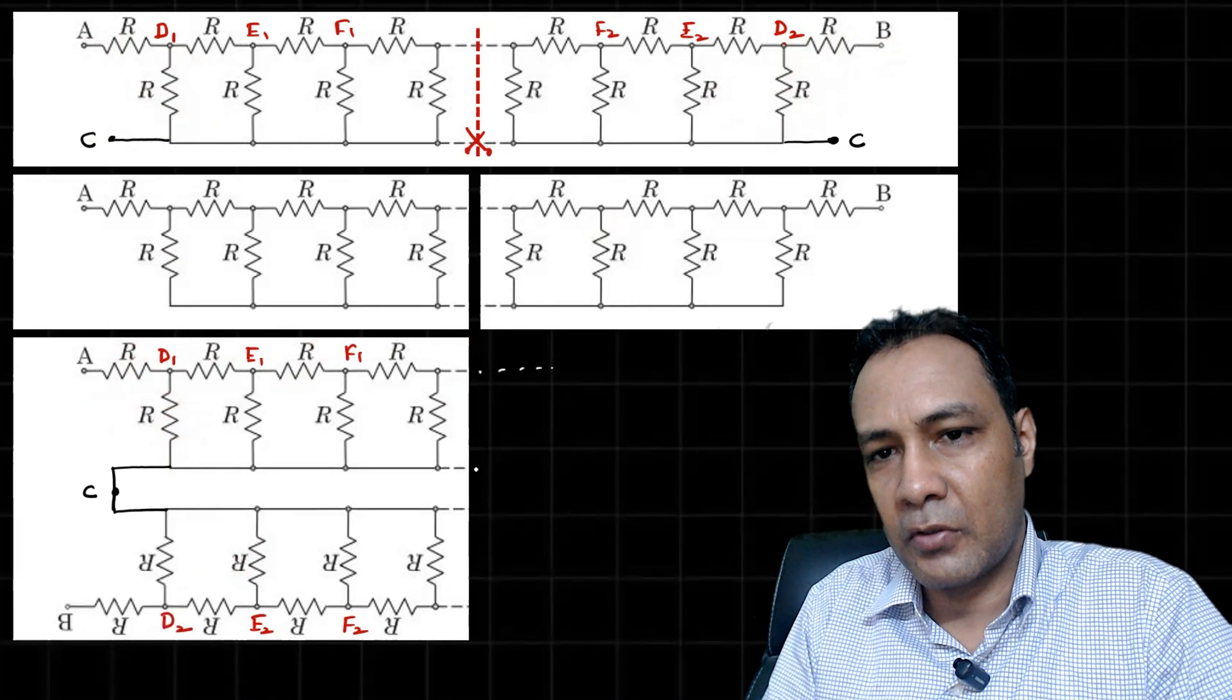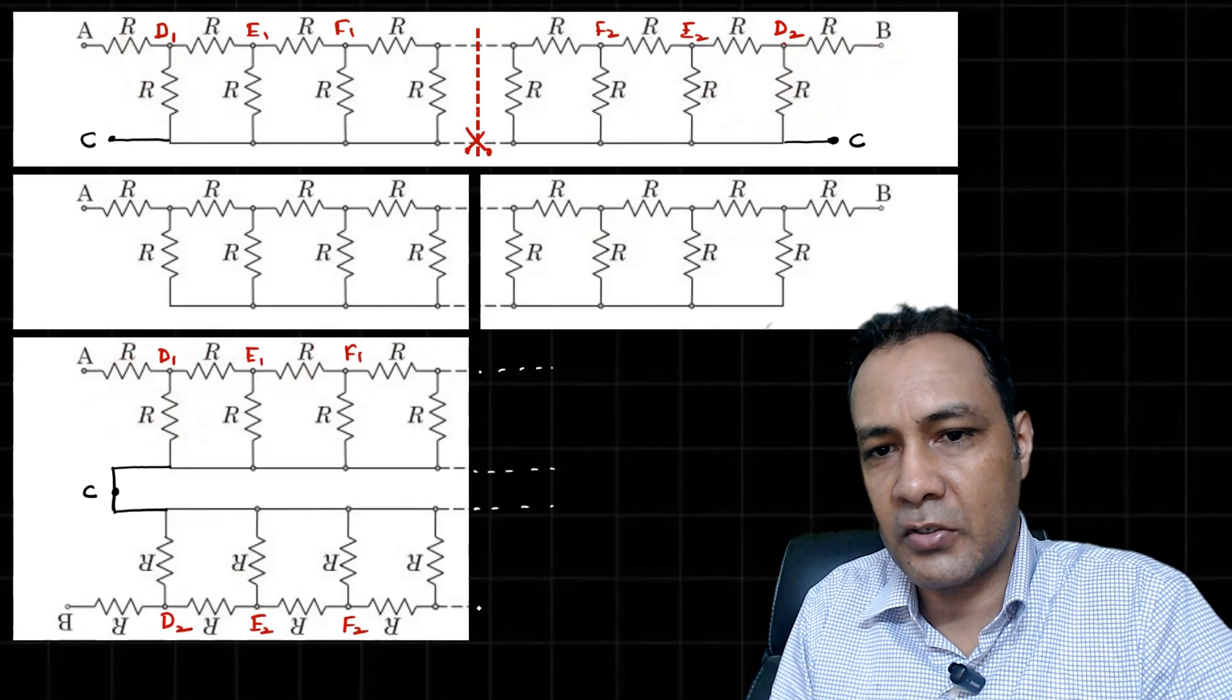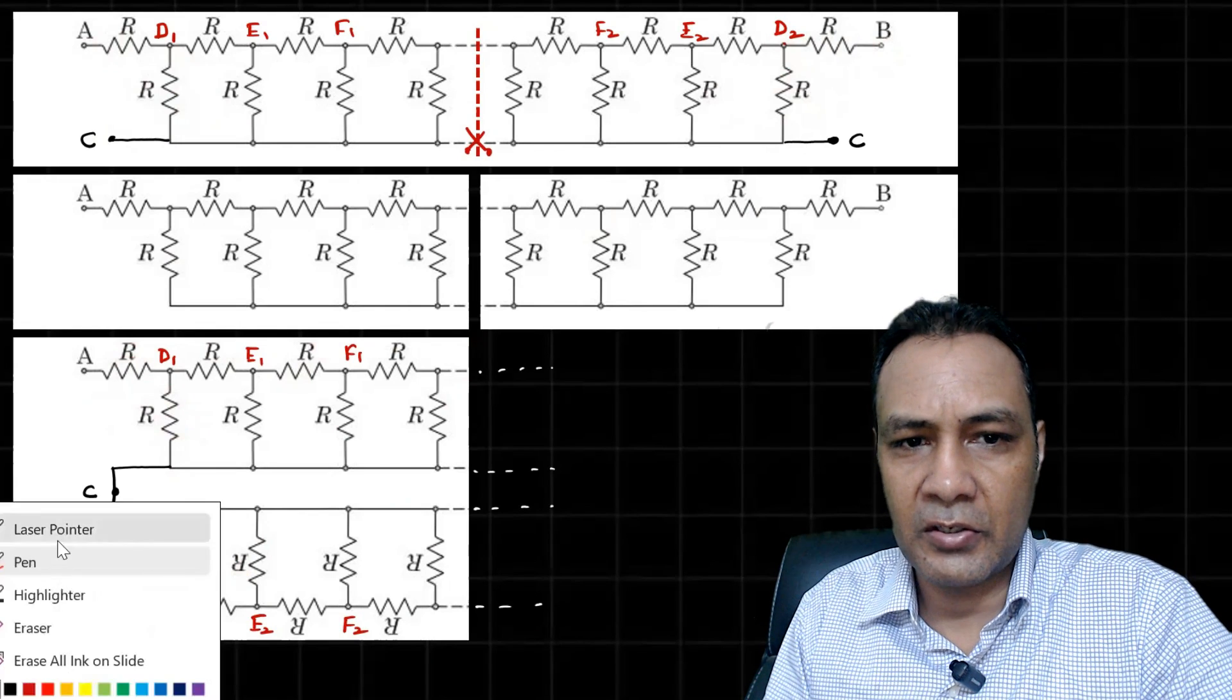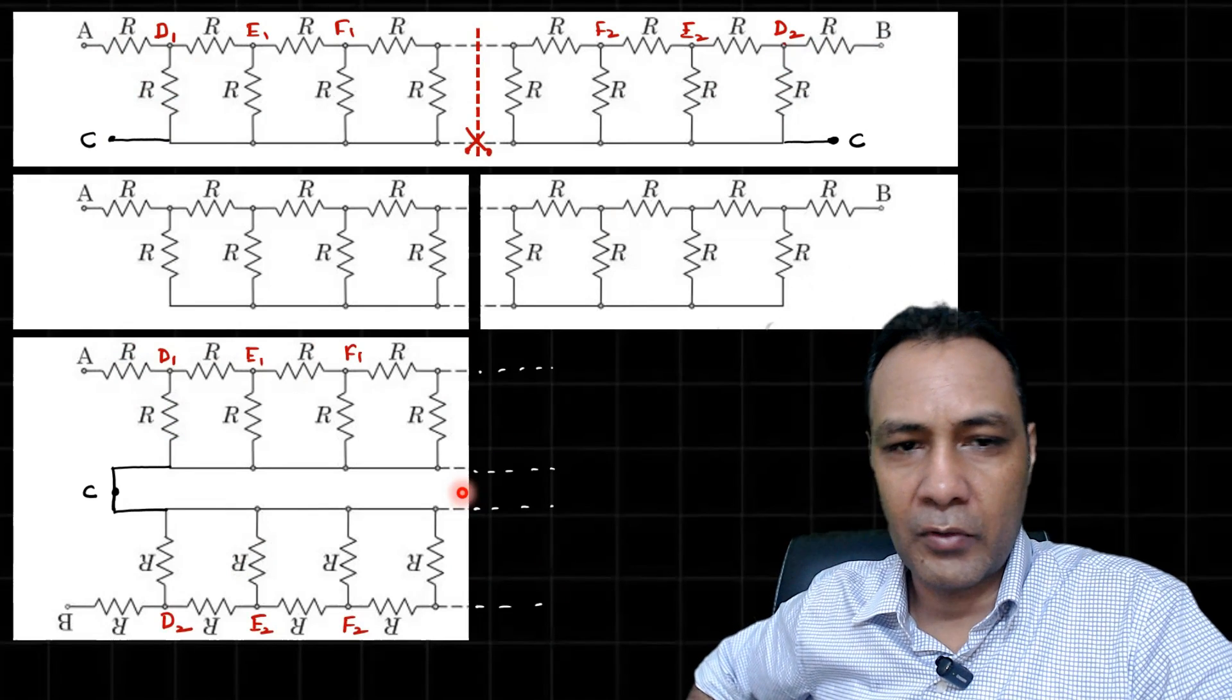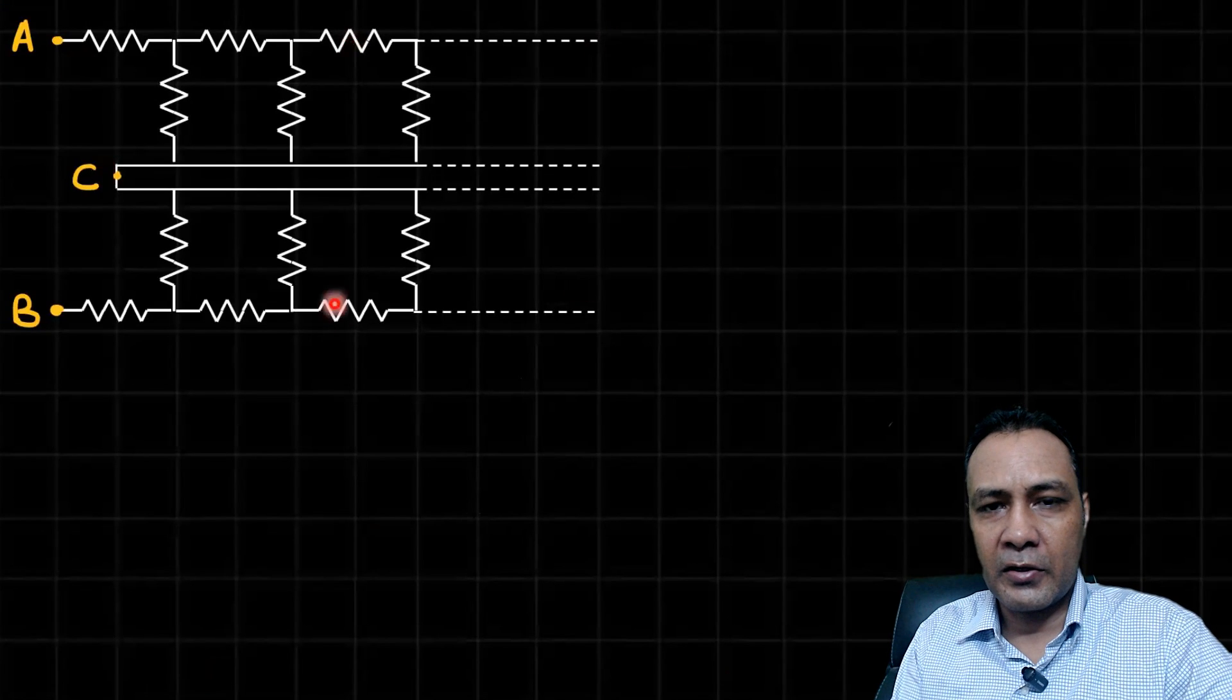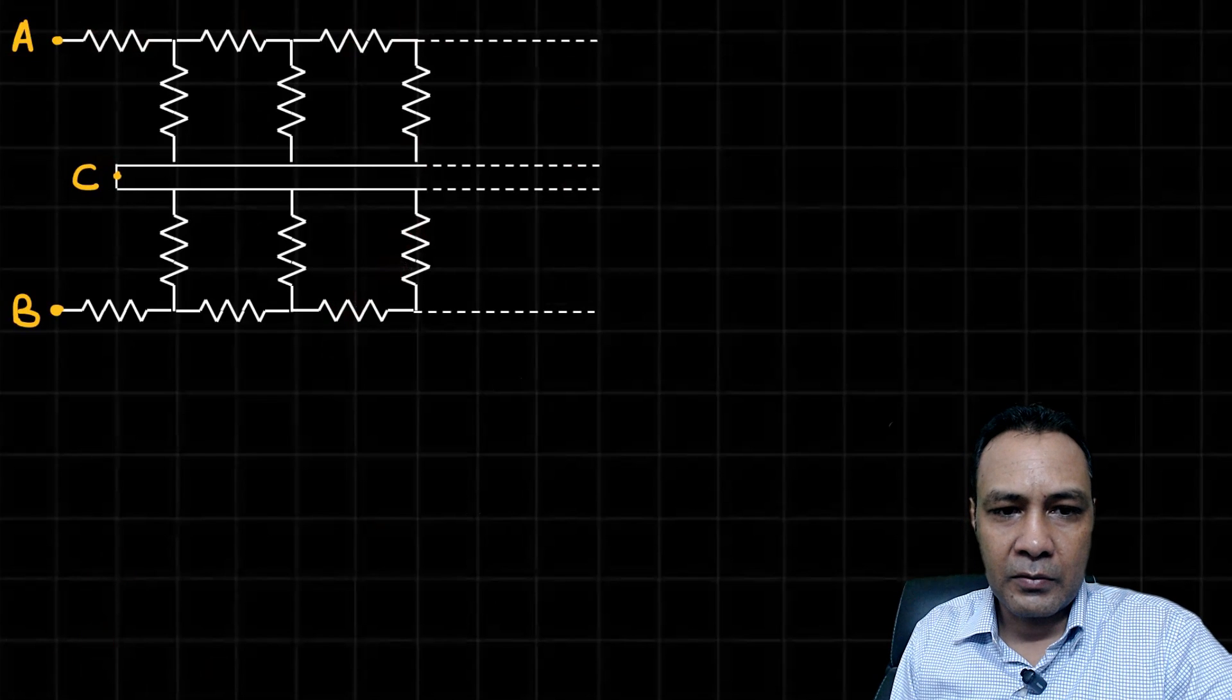Once you make this kind of a double ladder, you know how to solve an infinite ladder problem. That's straightforward. So this whole network is same as this network, they are identical. Now it's straightforward to find the equivalent resistance between A and B. Here I have not shown all the resistors, all are R.